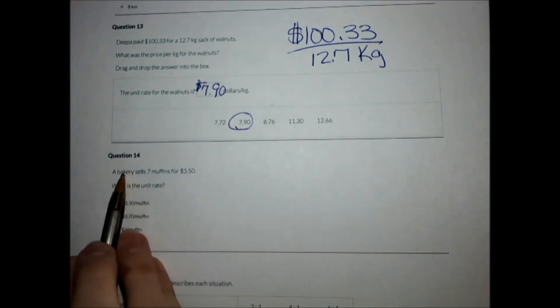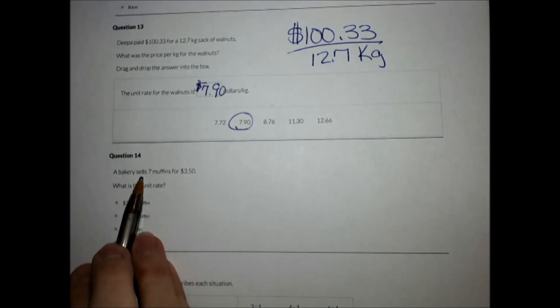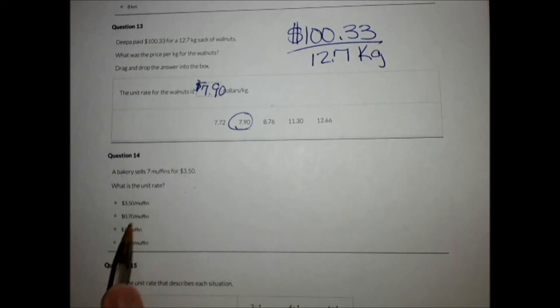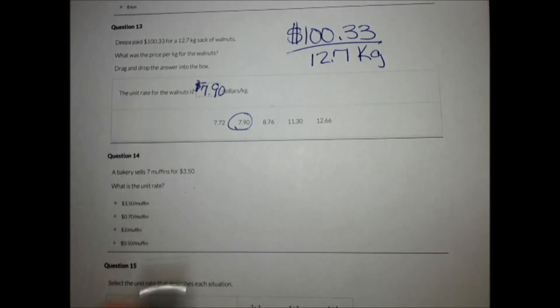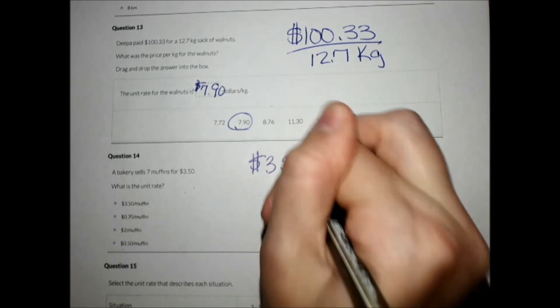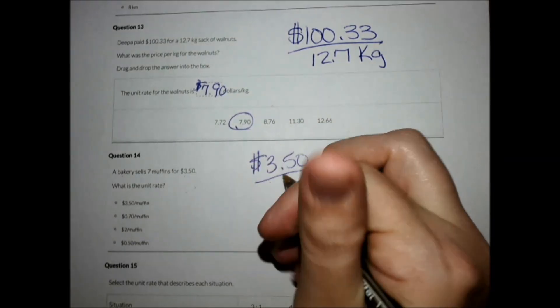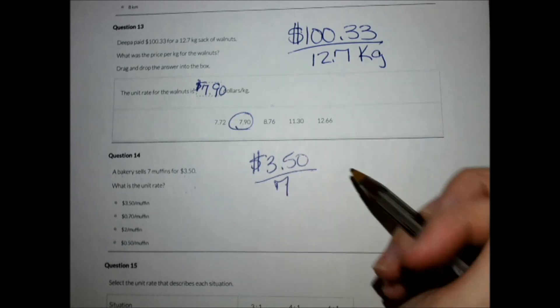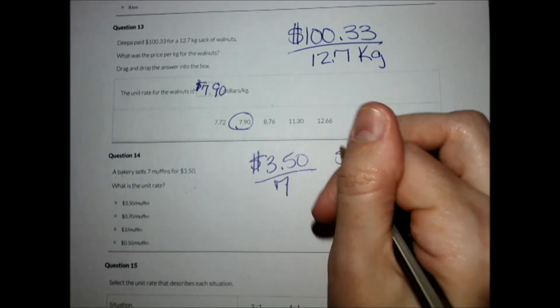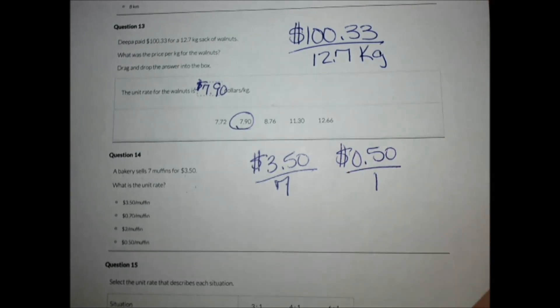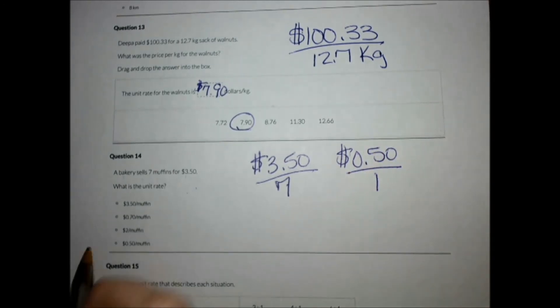This one, a bakery sells seven muffins for $3.50. What is the unit rate? Now, if you look at your answer choices, they have money on top. So I want to make sure I start with money. Usually anytime you see money, it will be on the top of your rate because it's price per item. So when I divide 7 into 350, I do get 50 cents per one. So that will be my answer.